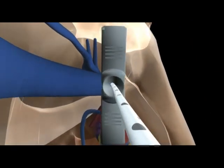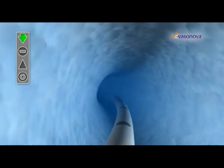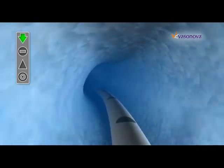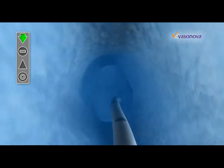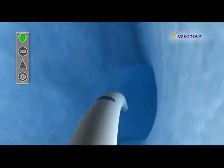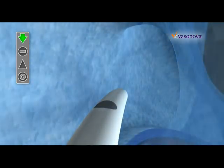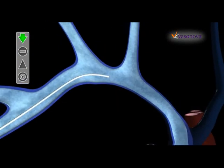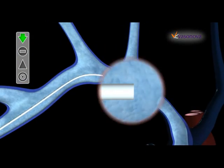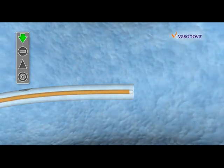Vasonova VPS technology is designed to use internal physiological information to specifically place the catheter tip in the optimal location within the vasculature. Inside the Vasonova VPS stylet is a unique combination of intravascular Doppler ultrasound and ECG signal sensing.